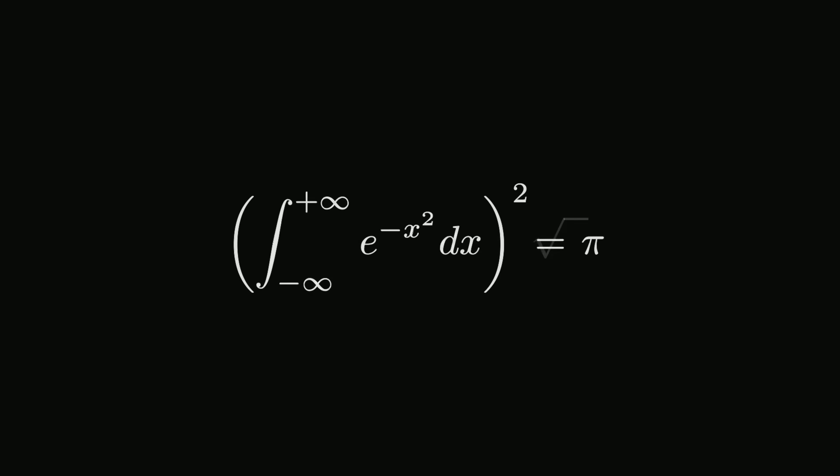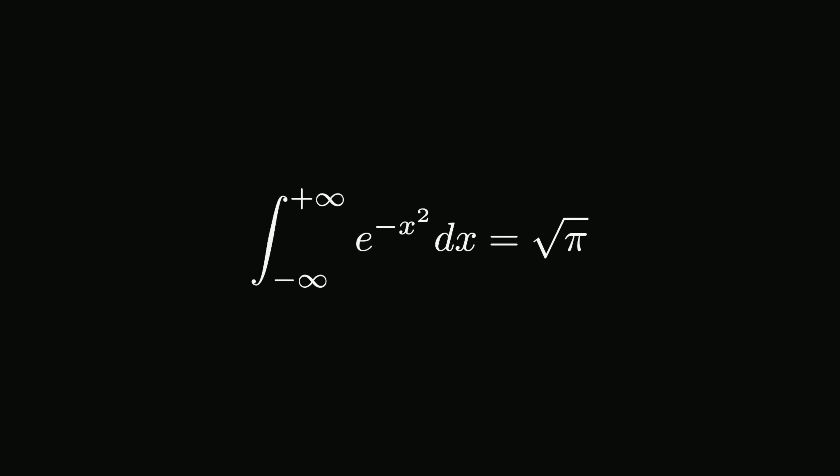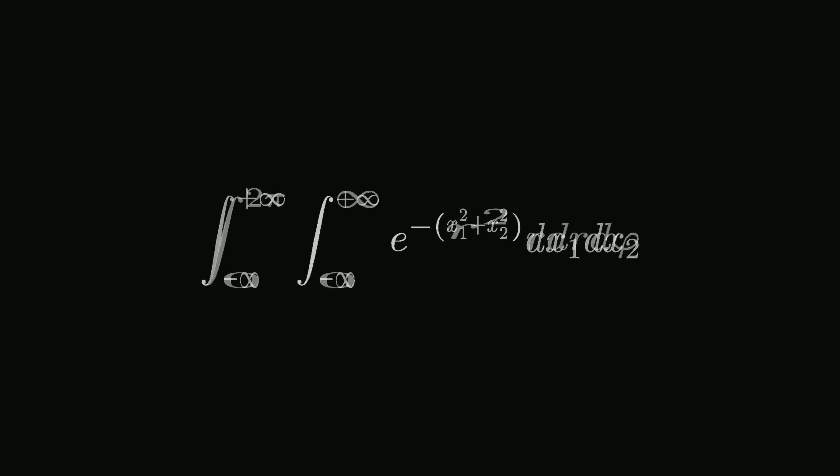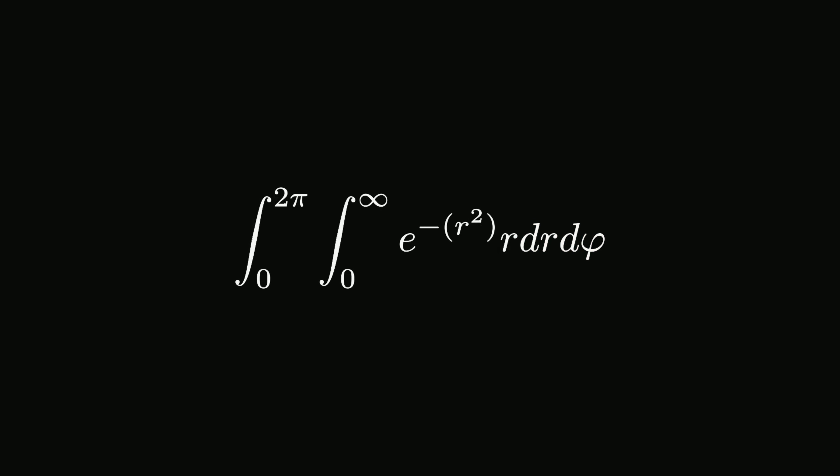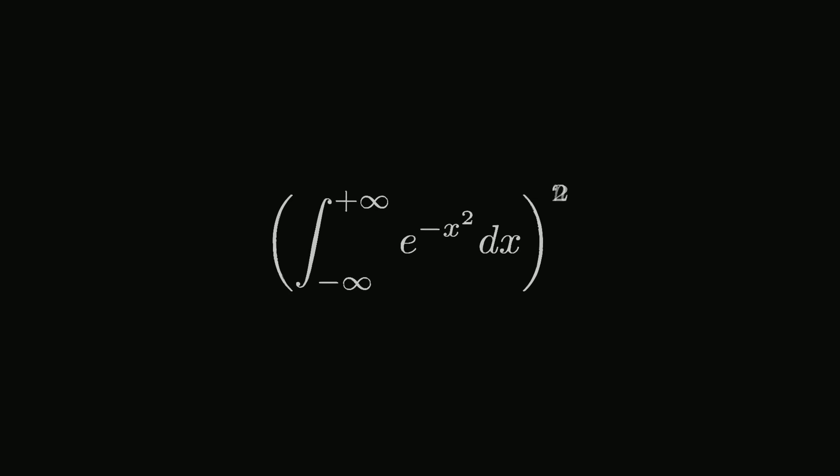Finally, taking the square root of that, we have the answer to our original integral, which is the square root of pi. So, why did we do any of that? Well, we saw that we had to change to polar coordinates to compute that integral. By using hyperspherical coordinates, we can generalize it to an n-dimensional sphere.